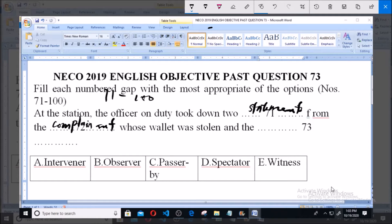So at the station, the officer on duty took down two statements from the complainant whose wallet was stolen and the dash. Option A: intervener, B: observer, C: passer-by, D: spectator, E: witness. As I have told us, this register is from crime, and in register we have related terms.